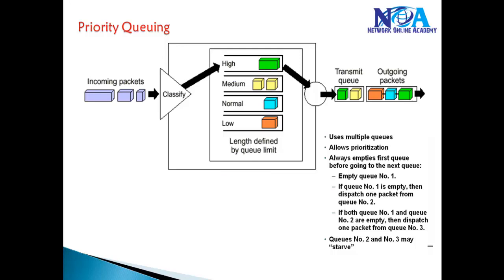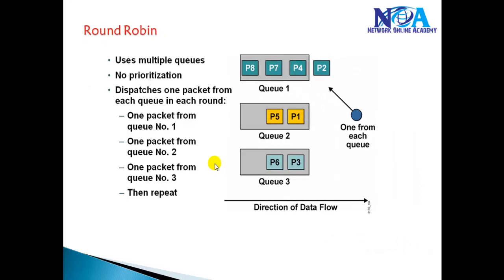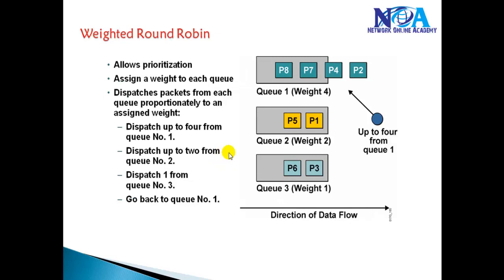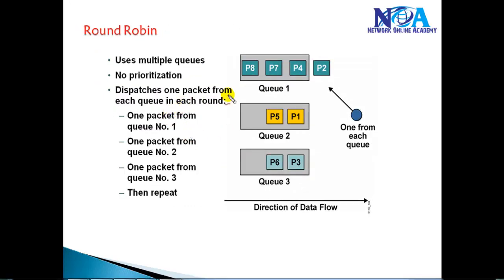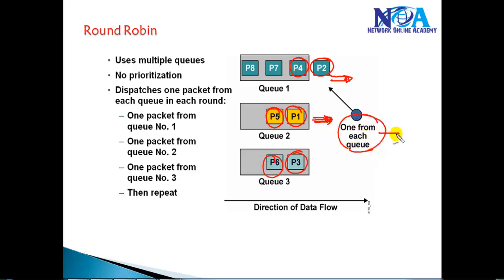The next queuing mechanism is round robin and weighted round robin. In round robin, packets are arranged in different queues and the device sends one packet from each queue in turn — one packet from Q1, then Q2, then Q3, and so on. It dispatches one packet from each queue in a round robin fashion, so all queues are treated equally and forward the same amount of traffic.